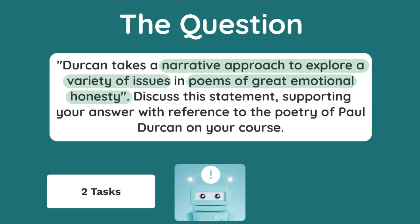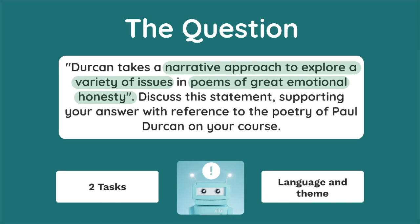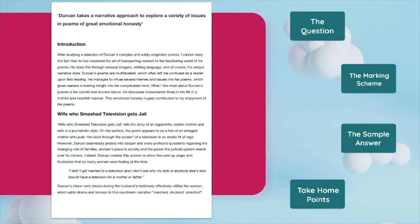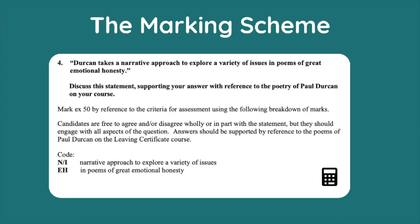A good tip when approaching the prescribed poetry section of the paper is to always remember that you're basically being assessed on your knowledge of your poet's language and themes — and this question is no different. Now that we've become familiar with the question, let's take a look at the marking scheme. The marking scheme outlines that the corrector is to reward students who engage with both aspects of the question, so to ensure you address all aspects in your essay, I would strongly advise that you create a plan.